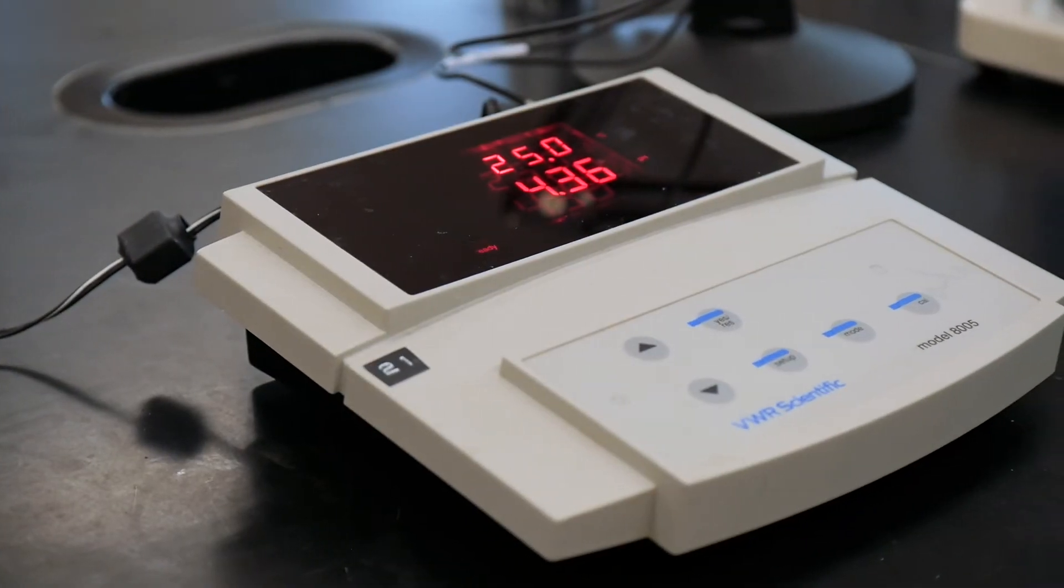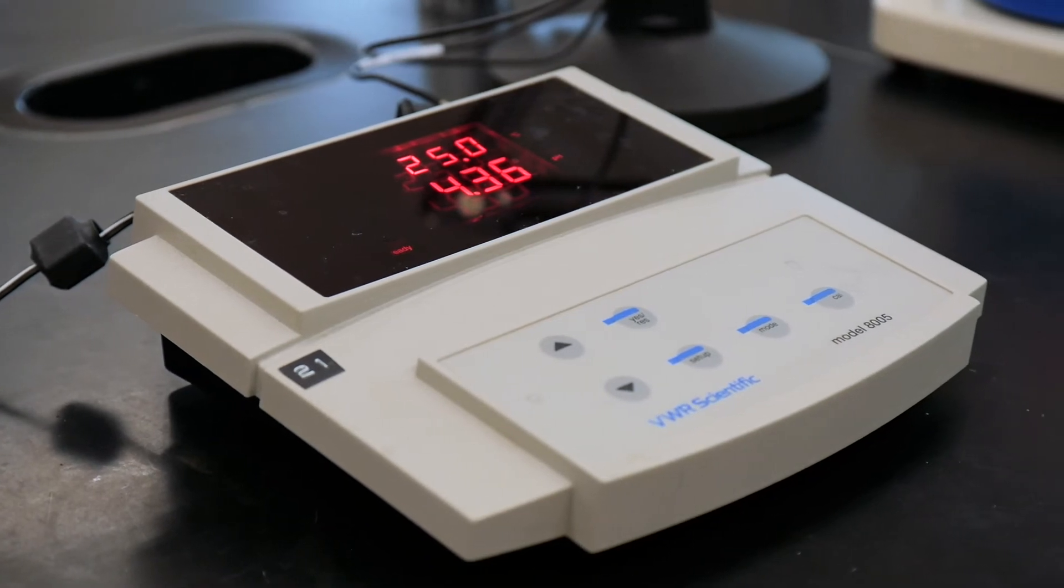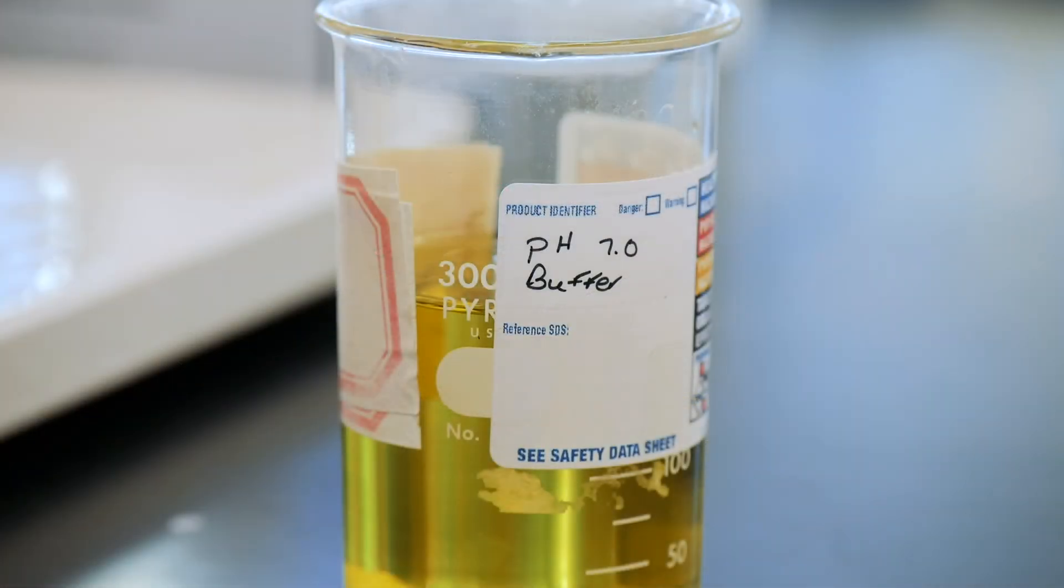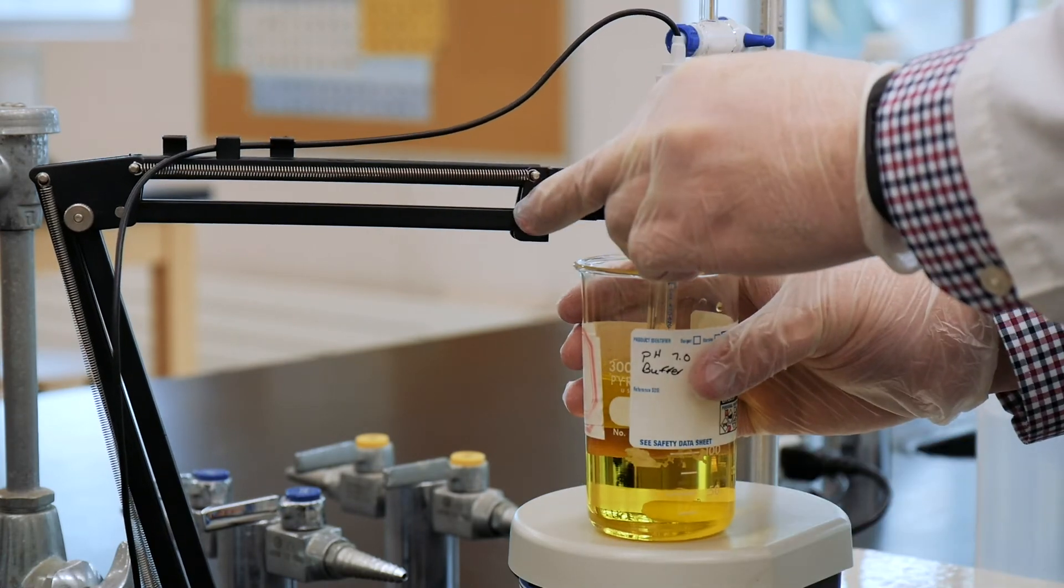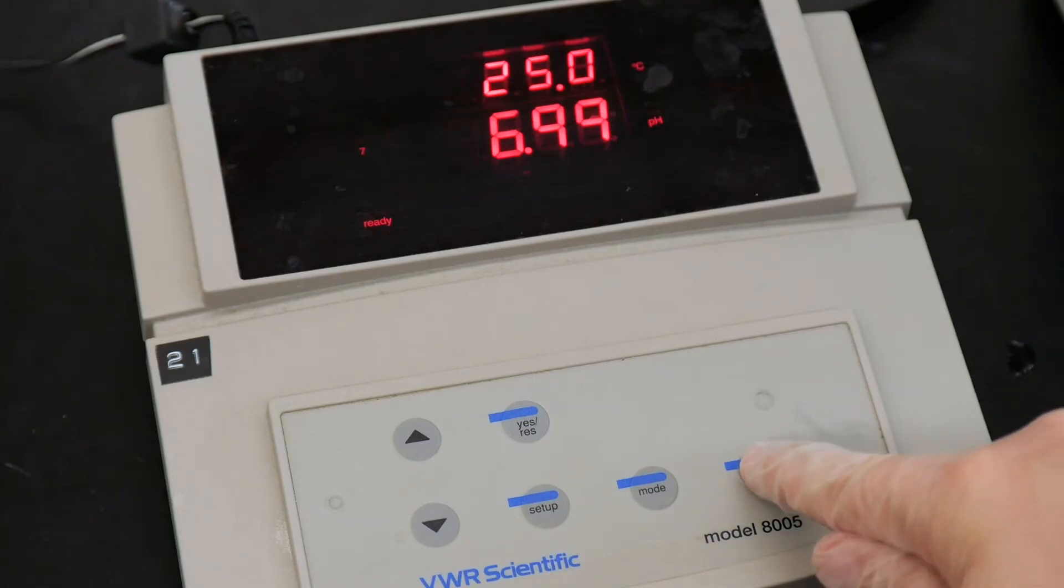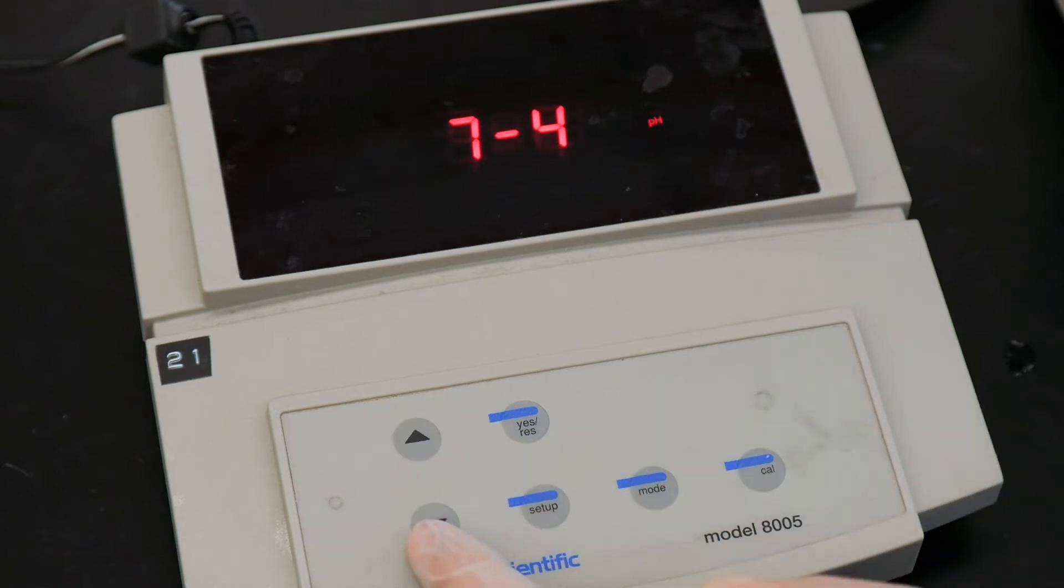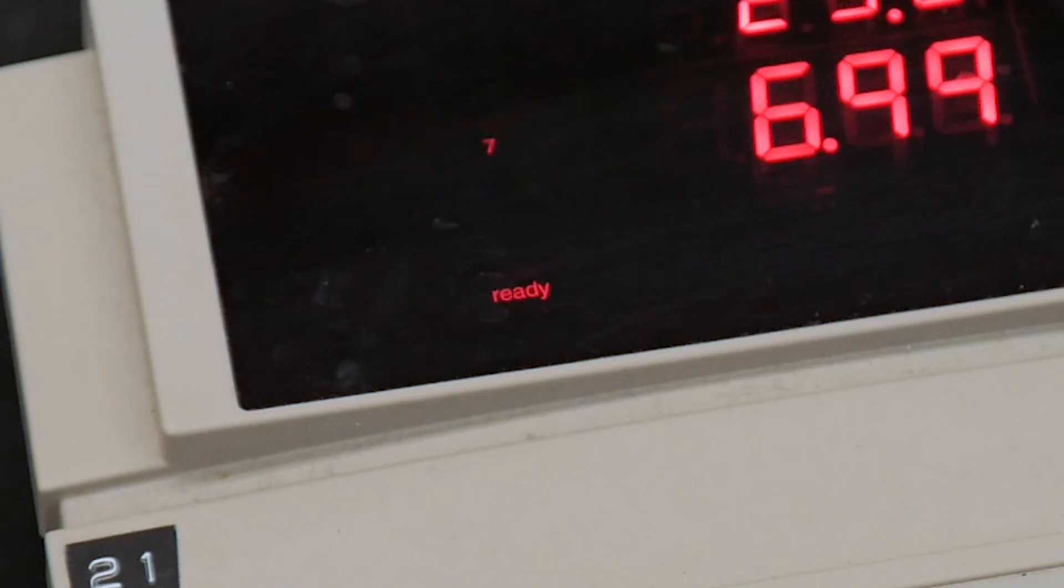Before we get started today, you'll need to calibrate the pH meter. To do that, a buffer solution that has a known pH of 7 is provided. Place the pH electrode in that buffer solution and press the Cal button, followed by the Up or Dn buttons, until the screen reads 7 pH, like so. Next, press the Yes button, and the screen will read ready.